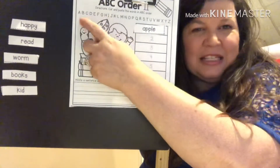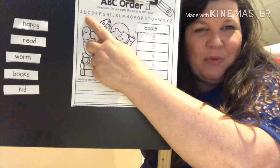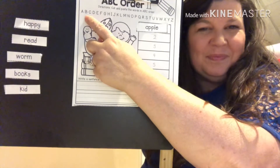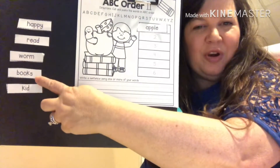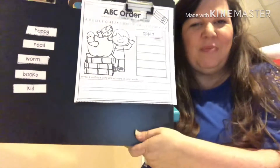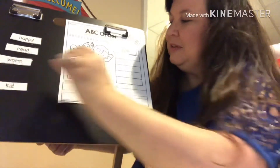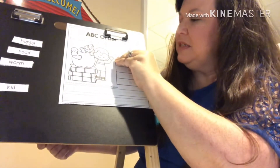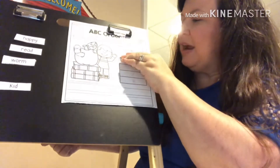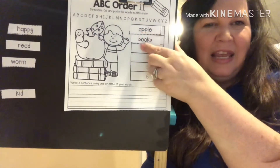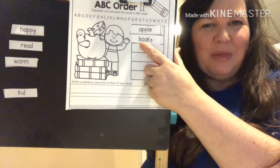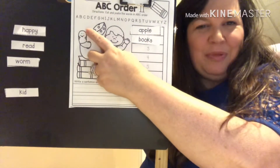Now let's go to the next letter, B. Do we have any B words? You're right, we do — it's the word books. Books starts with B, so we are going to take that one and put it right there in the second blank. Now we have: apple starts with A, books starts with B. Let's keep looking.